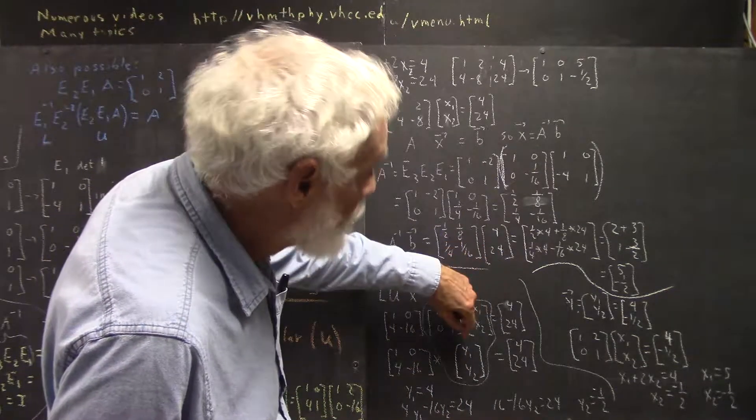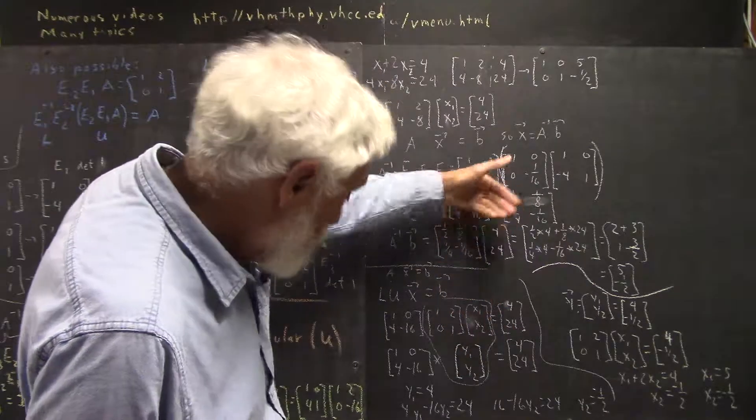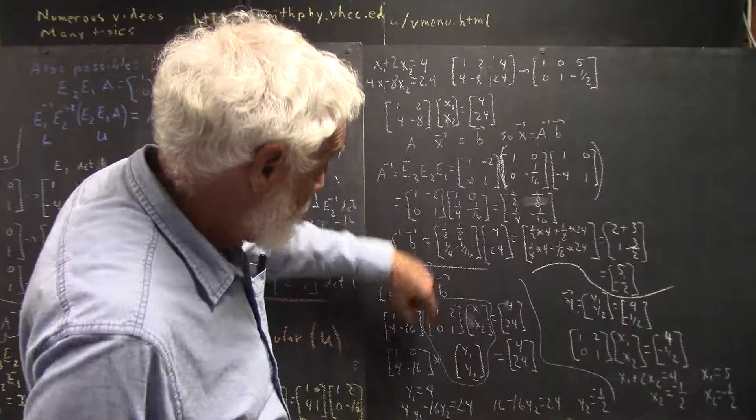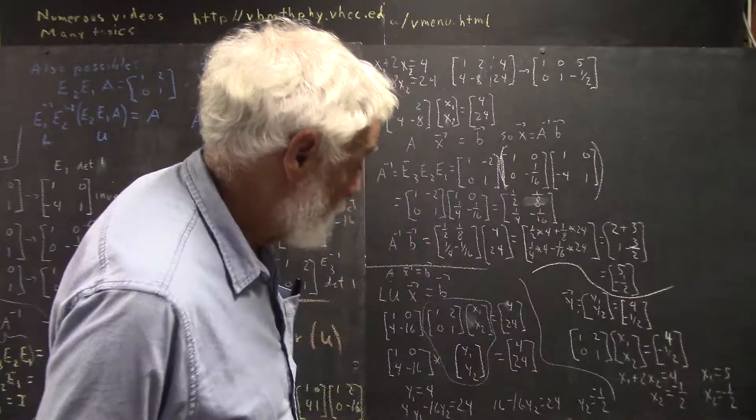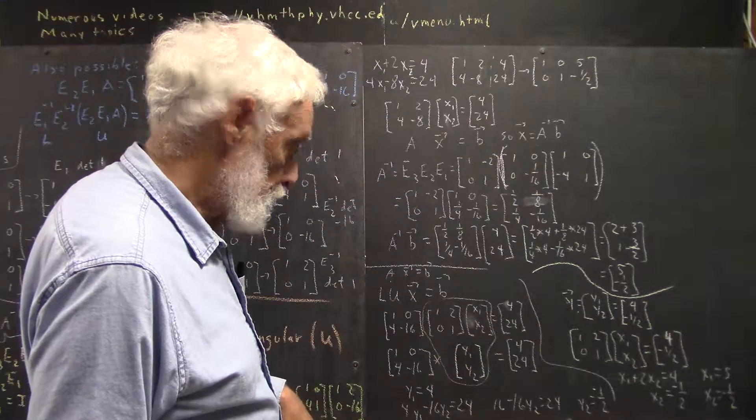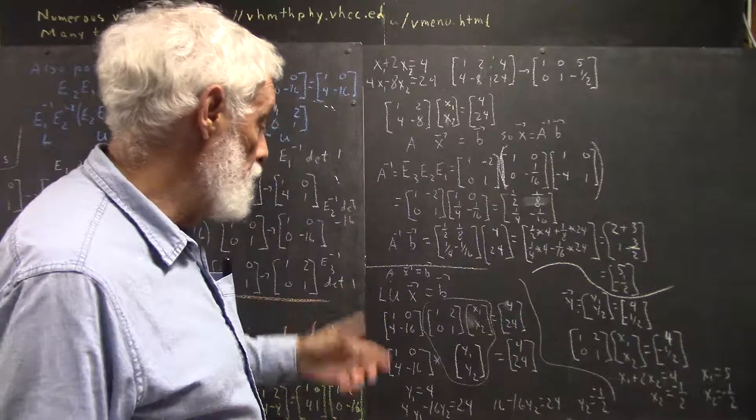Now, why do we go to this trouble? Because it's really easy. So, if we accept that we're replacing this for the moment by Y1, Y2, you'll see what we do next, we have this equation.